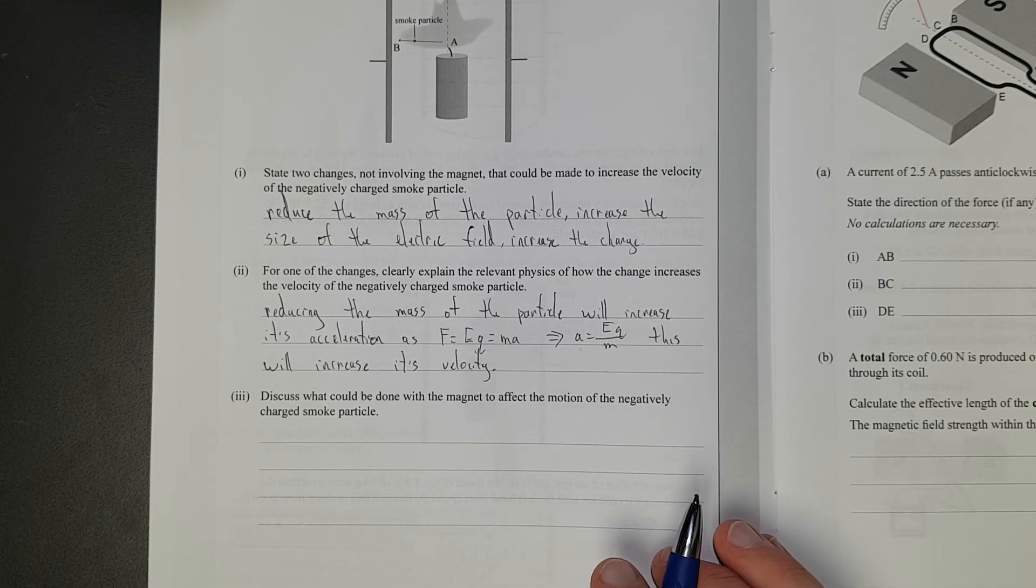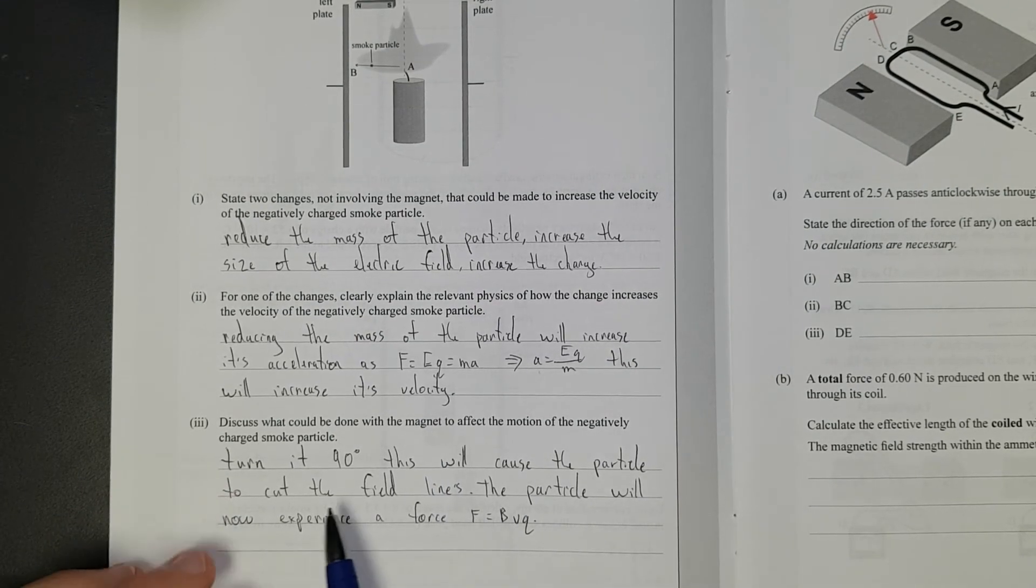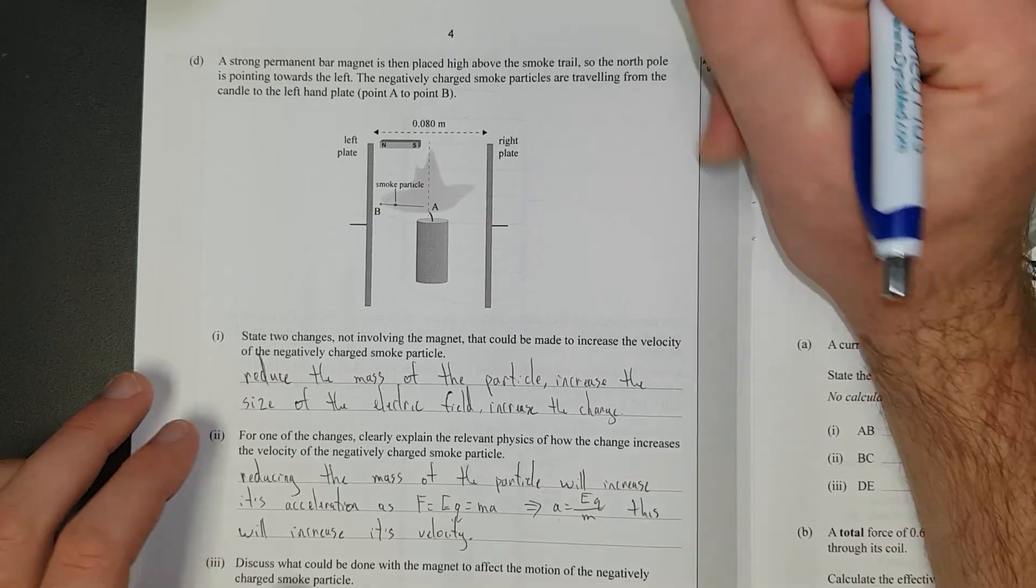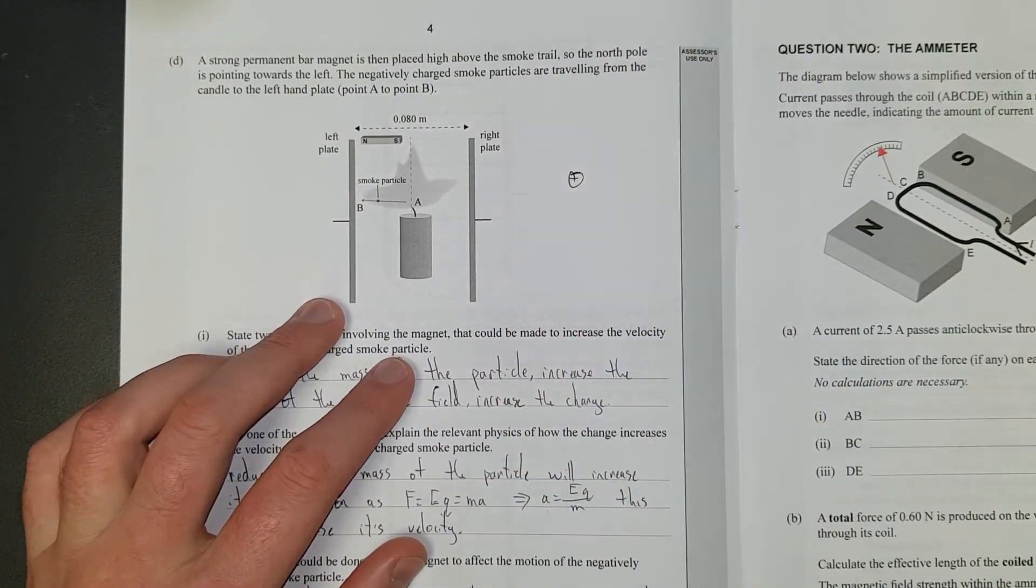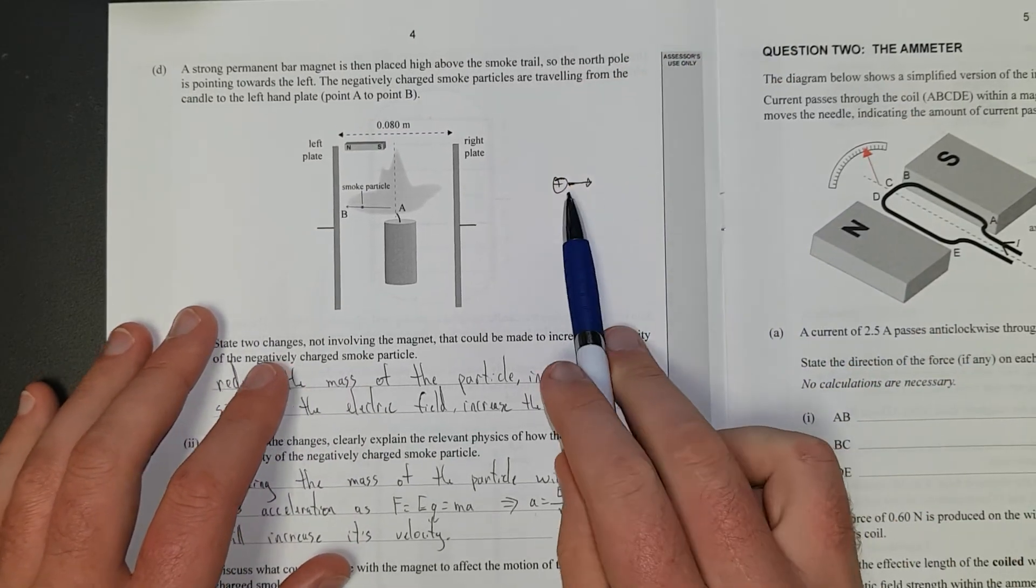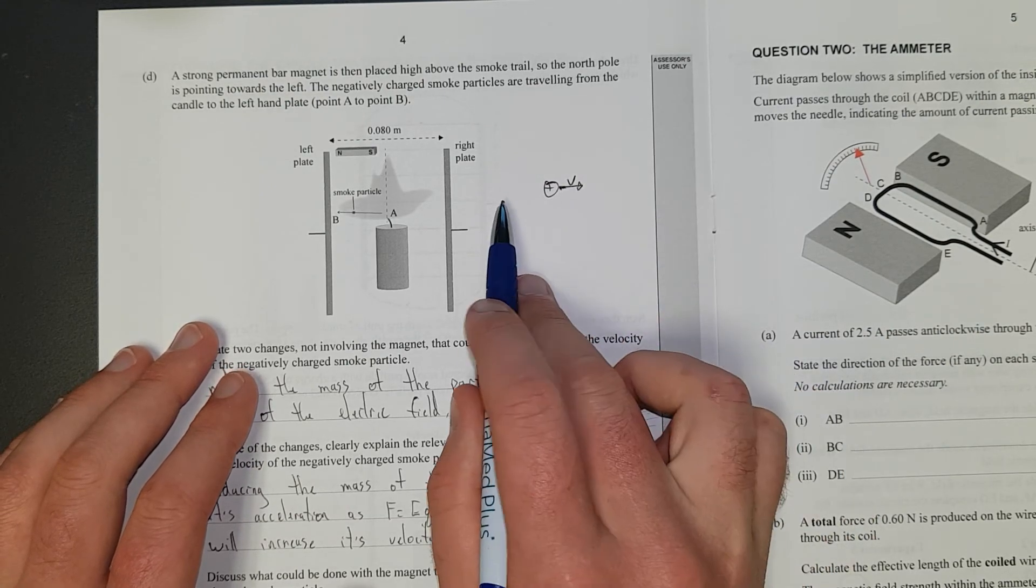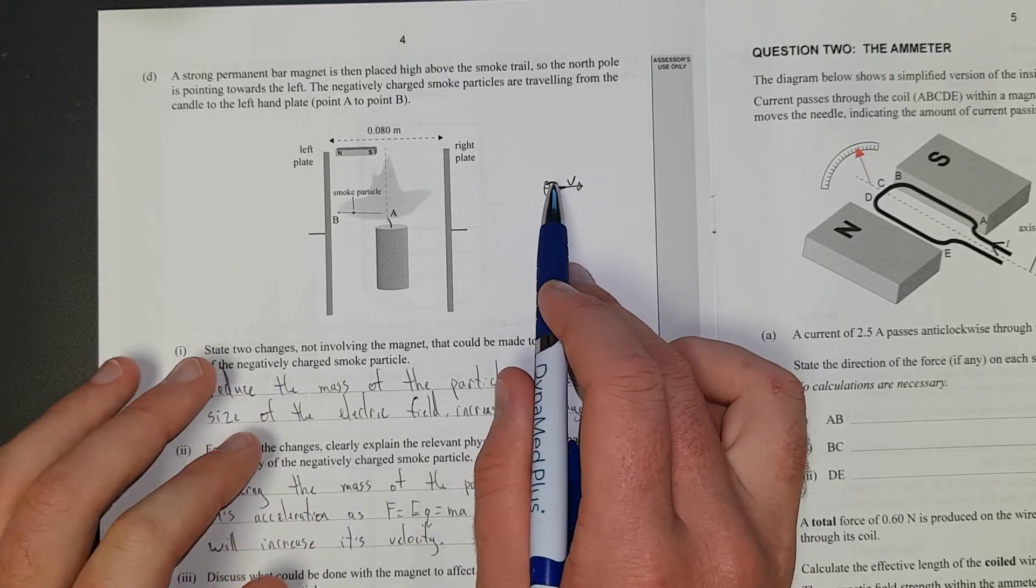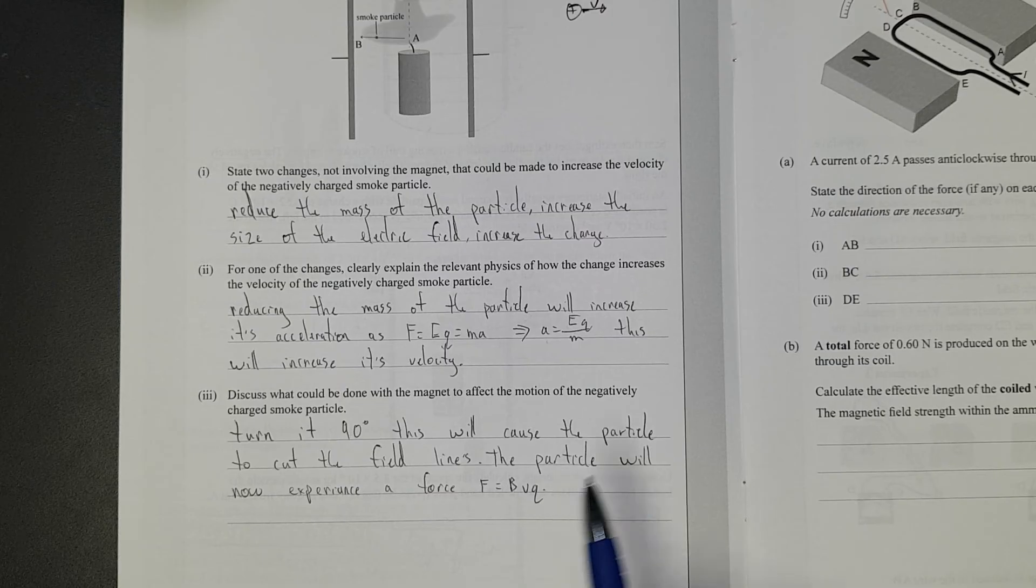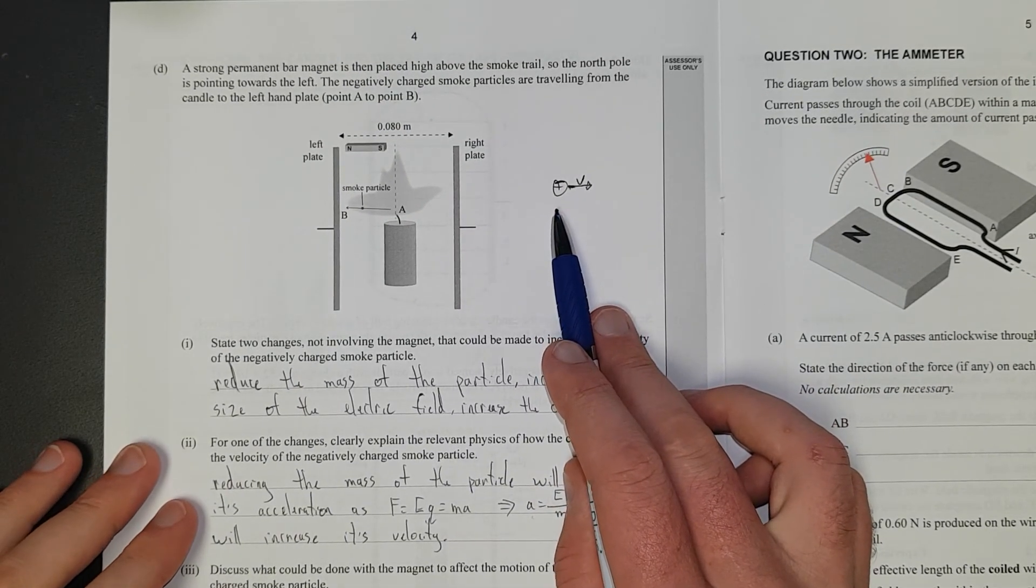Discuss what we've done to the magnet to affect the motion of the negatively charged smoke particle. So, I've said turn it 90 degrees. This will cause the particle to cut the field lines. The particle now experience a force. So, basically what it means is, if you have any charged particle, here's our positively charged particle. And it's moving, and if it's moving inside a magnetic field, if its velocity V is in line with the magnetic field lines, nothing happens. It just continues on. But if it cuts the field lines, so if it goes at any sort of angle that it cuts the field lines, it experiences a force. And that force is, the formula for that is B times the velocity times the charge.